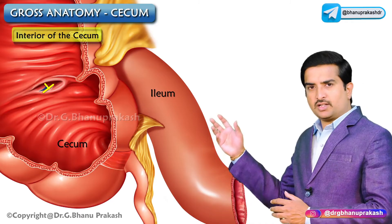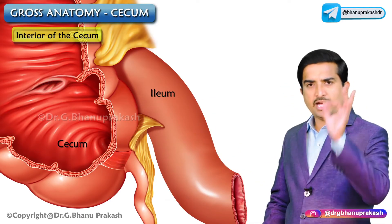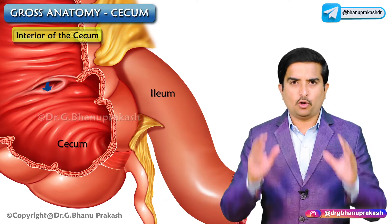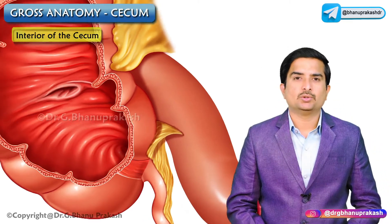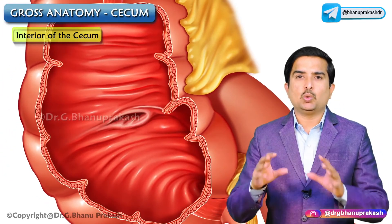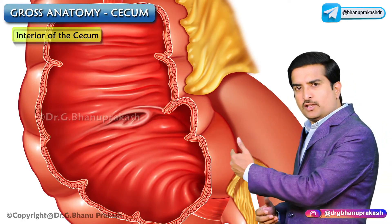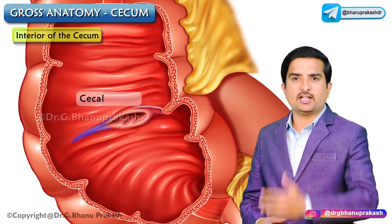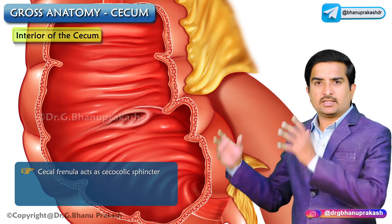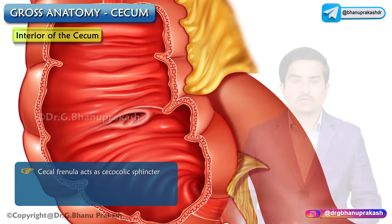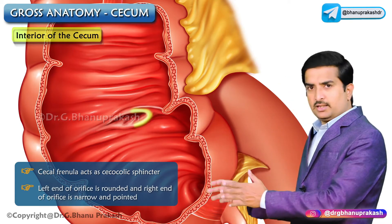The ileocecal valve prevents regurgitation of cecal contents into the ileum and regulates the flow of contents from the ileum to the cecum. The two lips meet at the ends and continue as mucosal folds known as cecal frenula, which may act as the cecocolic sphincter. The left end of the orifice is rounded and the right end is narrow and pointed.